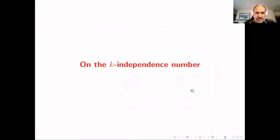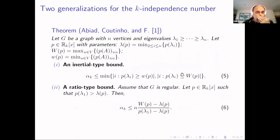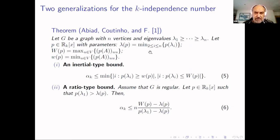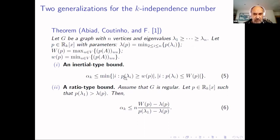What can we say about the k-independent number? We have two generalizations — more general because they are for any polynomial, due to this author in a recent paper. We use Lambda of p as the minimum value taken by the polynomial on the mesh different from the spectral radius. We also use the maximum and minimum of the diagonal entries of P(A). The polynomial P is supposed to have degree k.